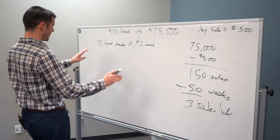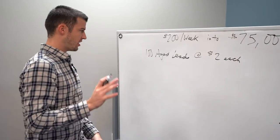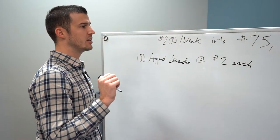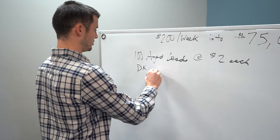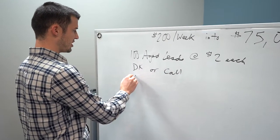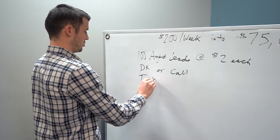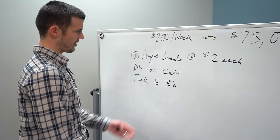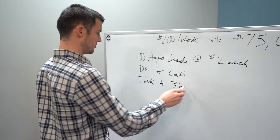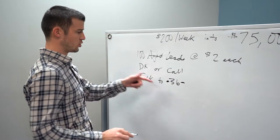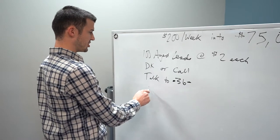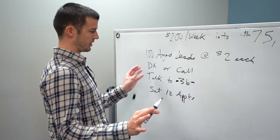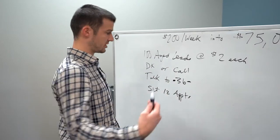So let's go back to 100 aged leads. Let's just say that you either door knock or call, I don't care which. Let's just say that you actually talk to about 36 people. And that may be whatever, you can figure out your own numbers because if you make a few calls to them, you probably talked to about 36 people. And then let's just say that out of those you set 12 appointments. And these are all really conservative numbers.